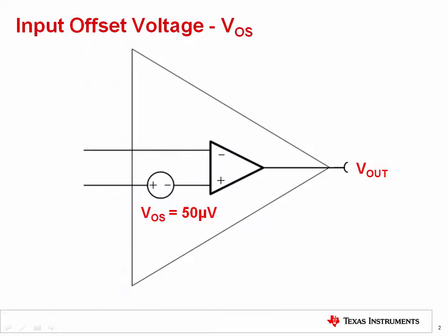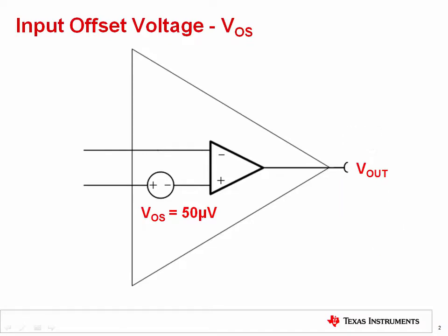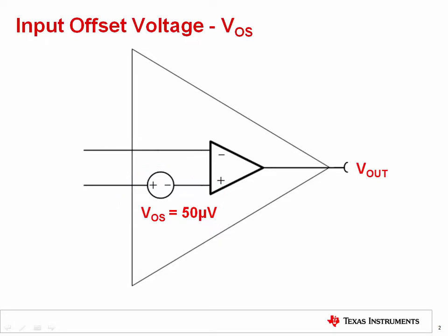Let's start by defining offset voltage. Offset voltage is the differential input voltage that would have to be applied to force the op amp's output to zero volts. Typical offset voltages range from millivolts down to microvolts depending on the op amp model. Offset can be modeled as an internal DC source connected to the input of the op amp. Changing power supply voltage and common mode voltage will affect input offset voltage.